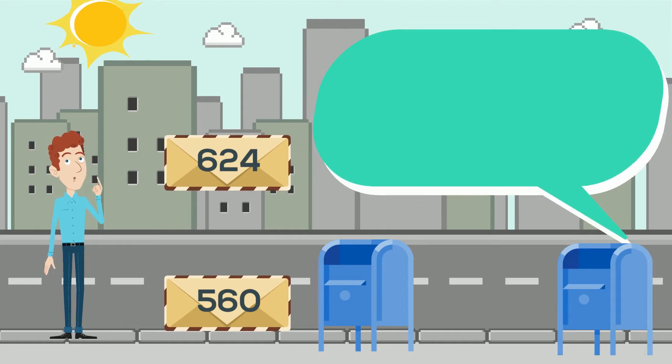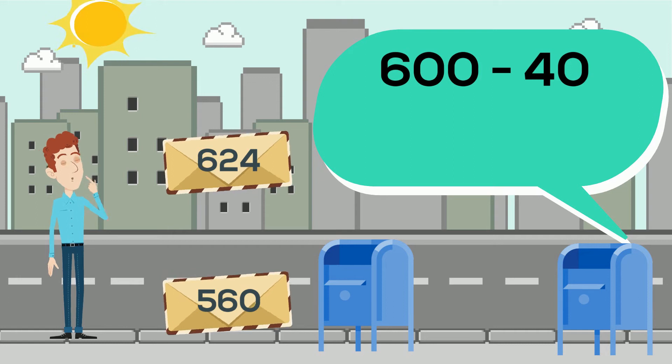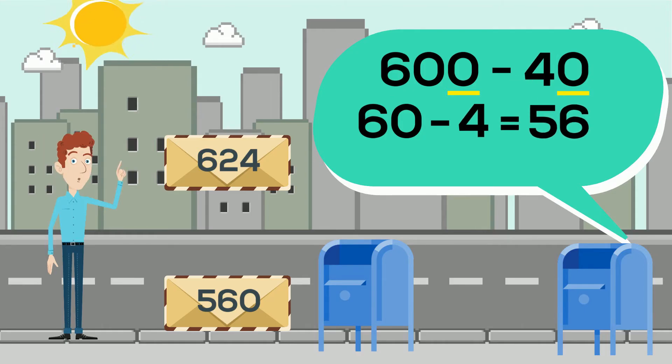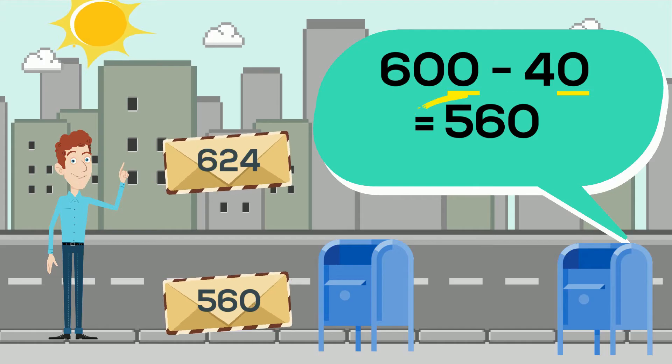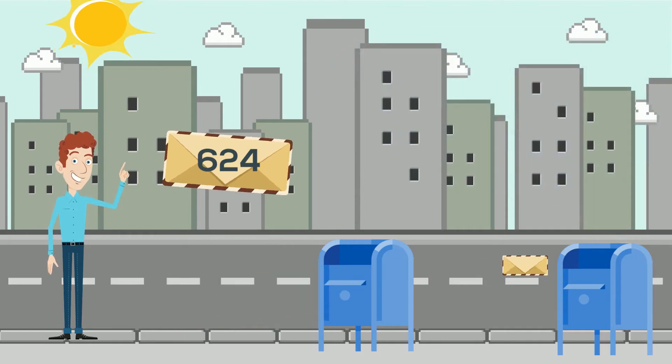The next mailbox says 600 minus 40. This time, notice that the ones place for both numbers is zero. That means we can simply subtract 60 minus 4, which is equal to 56. Then add back one zero, making it 560. Looks like this envelope says 560, so let's drop it in the mailbox.